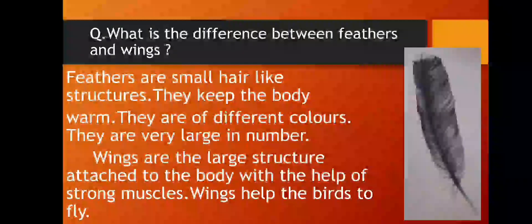Wings are the large structures attached to the body with the help of strong muscles. As I told you before, these wings are attached to the birds' body with the help of strong muscles. The strong muscles in their body keep these wings connected to their body. Wings help the birds to fly. And obviously students, these wings help birds to fly.